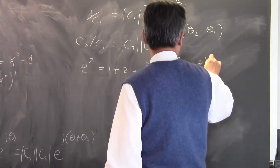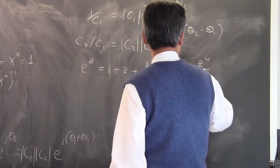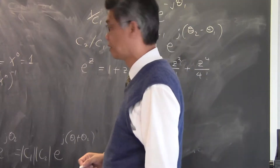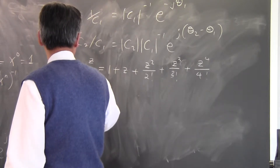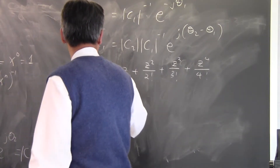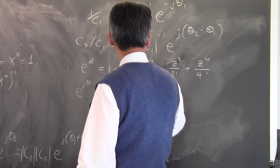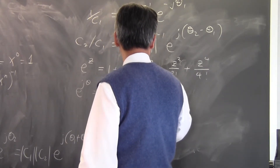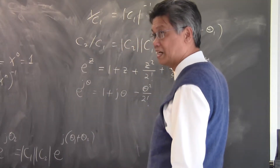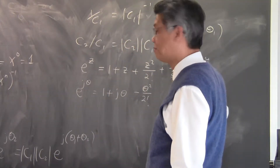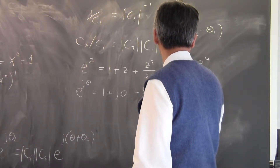Starting from the Taylor series — factorial plus Z⁴ over 4 factorial — if you now replace Z with jθ, you will have jθ, and because of (jθ)², you will have minus θ² over 2 factorial. Then you have j three times, getting minus j out, giving minus j θ³ over 3 factorial.